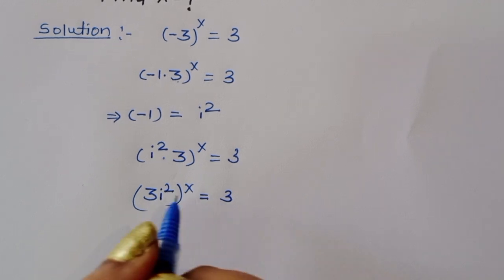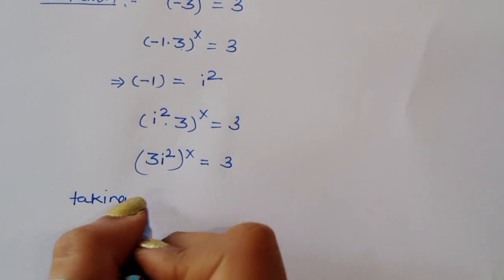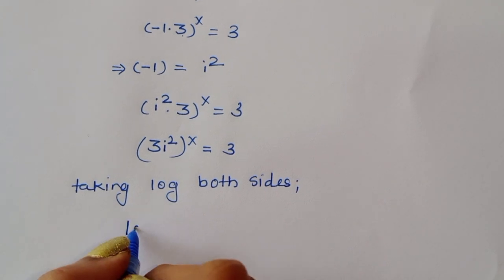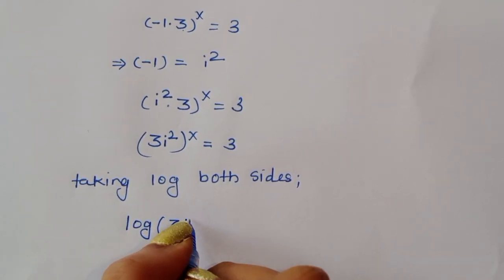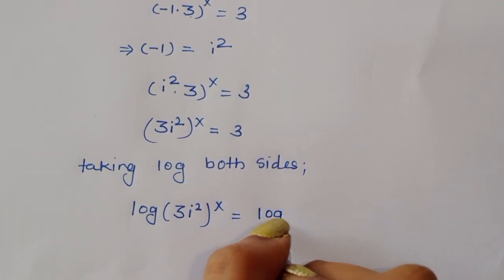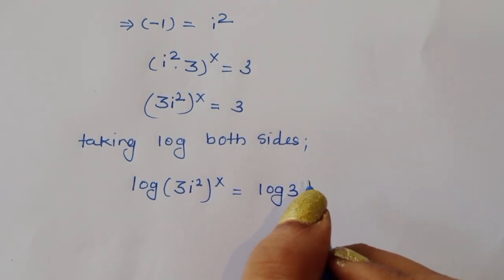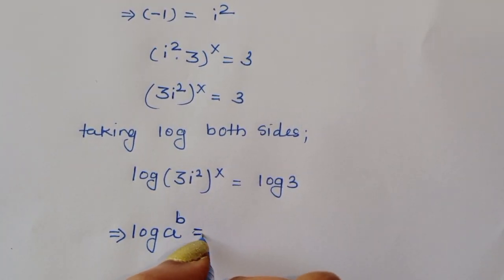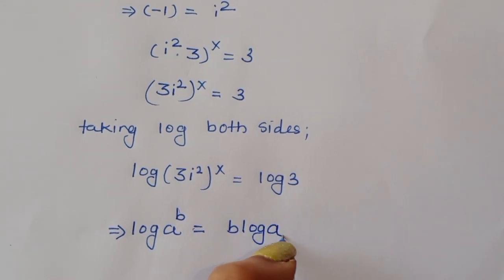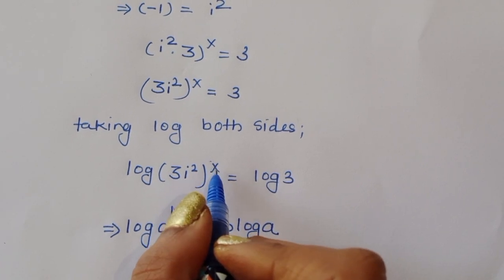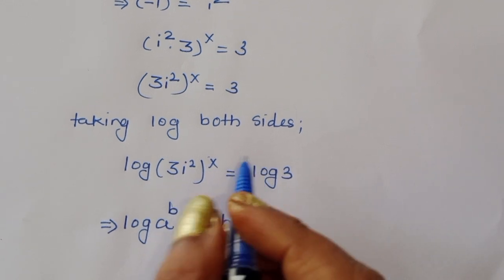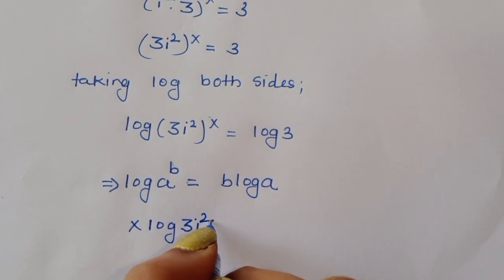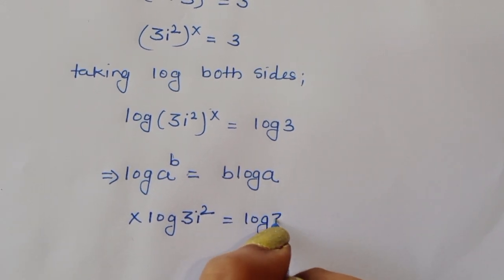Now we can take log of both sides. Taking log of both sides, we get log of 3i squared to the power x equals log of 3. Using the formula log of a to the power b equals b times log of a, the exponent x comes down: x times log of 3i squared equals log of 3.